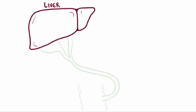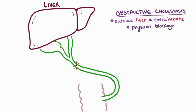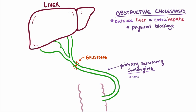The other major type of cholestasis is obstructive, which usually happens outside the liver, so we can call it extrahepatic cholestasis. This is usually a physical blockage of the common bile duct. It could be a gallstone that came from the gallbladder, or it could be from primary sclerosing cholangitis, where the body's immune system attacks the bile ducts, causing inflammation and scar tissue in those ducts, which can make it more difficult for bile to flow through them.